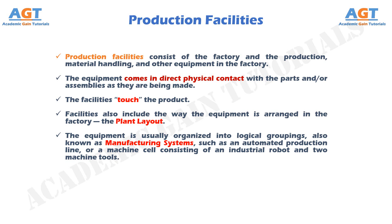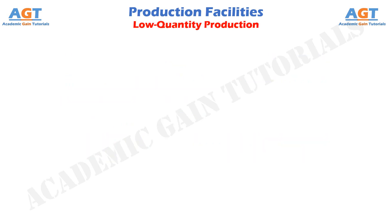Over the years, certain types of production facilities have come to be recognized as the most appropriate way to organize for a given combination of product variety and production quantity, as discussed in previous classes. Different types of facilities are required for each of the three ranges of annual production quantities.